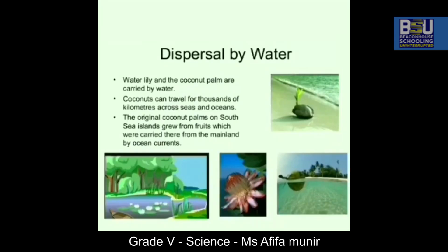Then there is dispersal by water. The water lily and the coconut palm are carried by water. Coconuts can travel for thousands of kilometers across seas and oceans. The original coconut palms on South Sea islands grew from fruits which were carried there from the mainland by ocean currents.